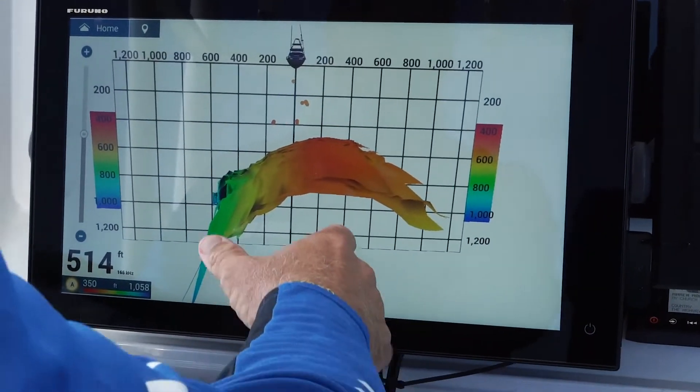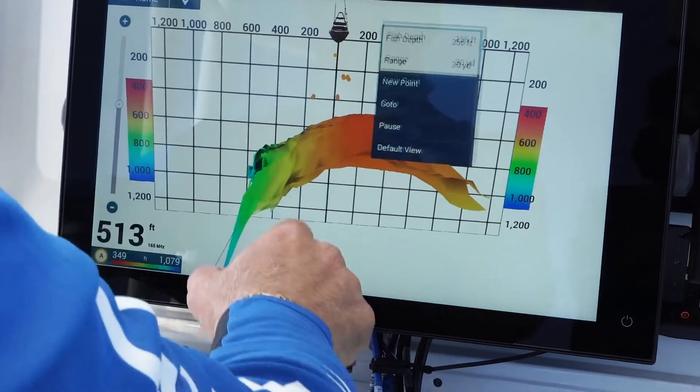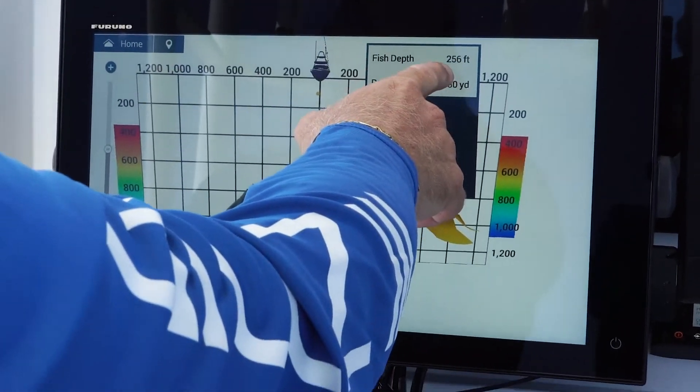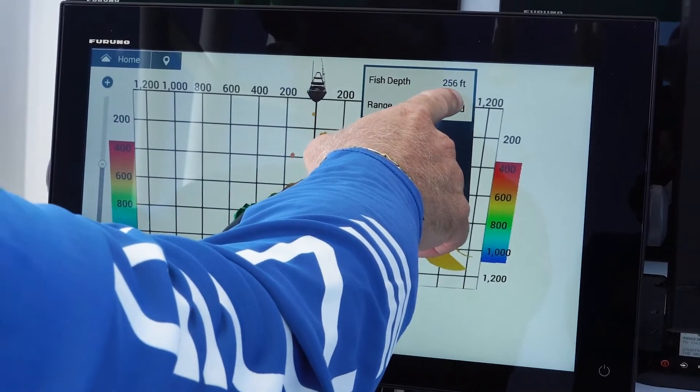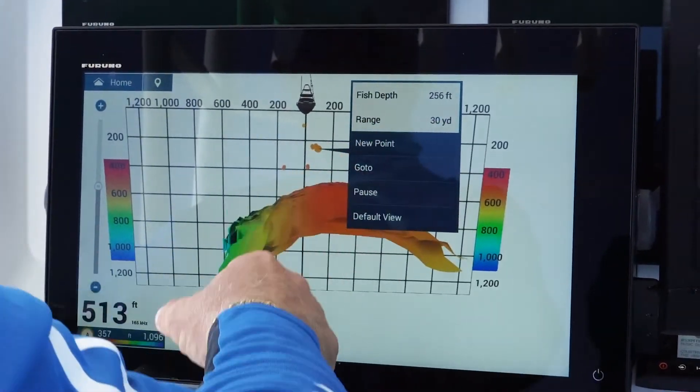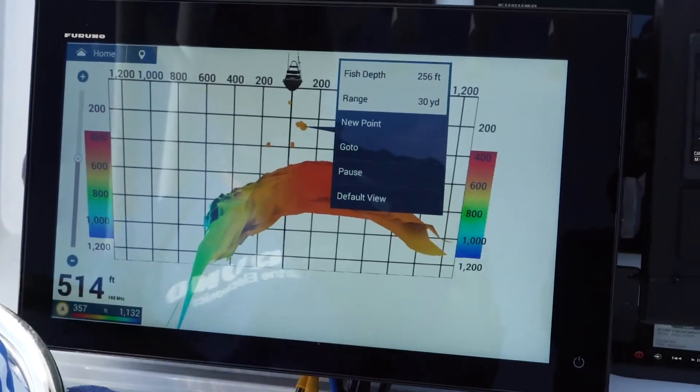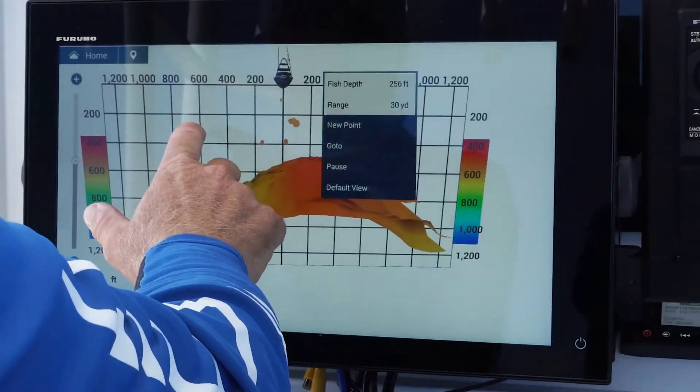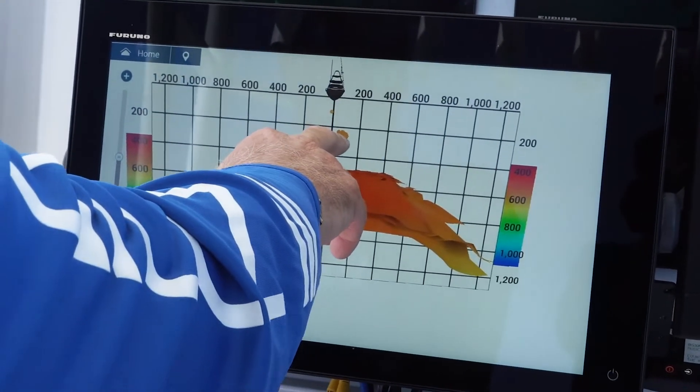What I like a lot too, it's showing me where the fish are. So these fish right here, I know they're going to be down 256 feet, and it'll be 30 yards off your port side or starboard side. And it'll show me that's a big cluster of fish as well.